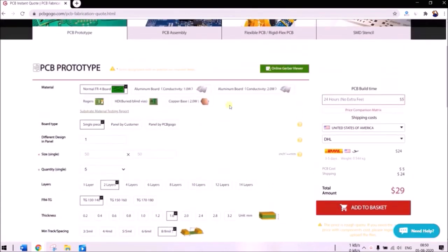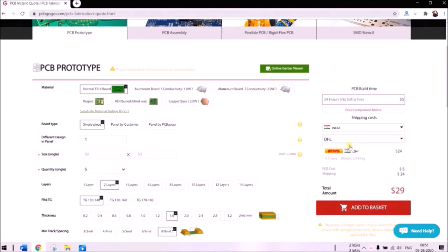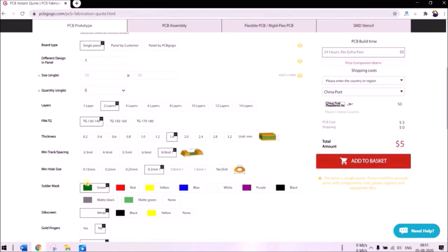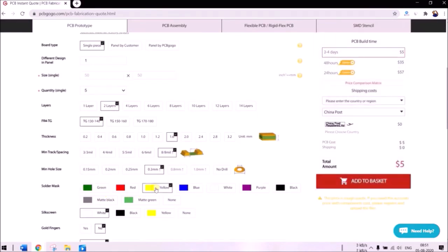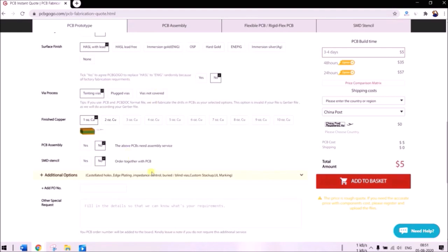On the right side you can see the build time and price you have to pay for the PCB and shipping. In my case let me select India as country and change the shipping method to China post. Now as you can see the price gets updated and it's only five dollars for all our five PCBs. What's more interesting is that you can change the solder mask color say to yellow in our case and the cost remains the same. Mostly you can leave these values to default and you should be okay.